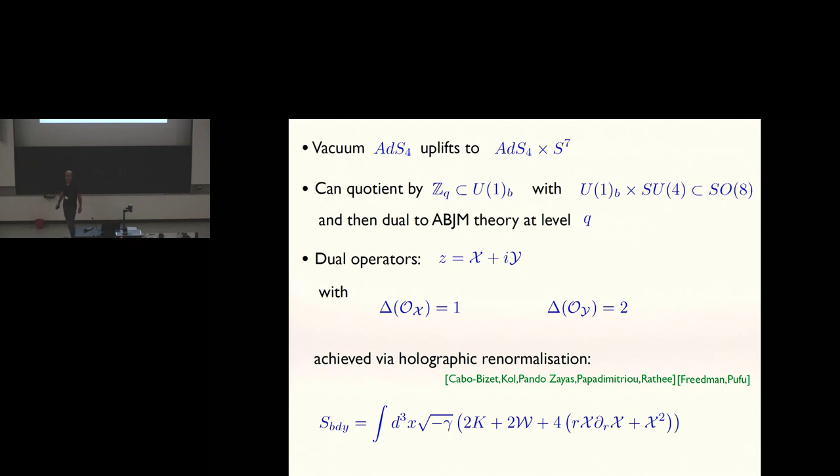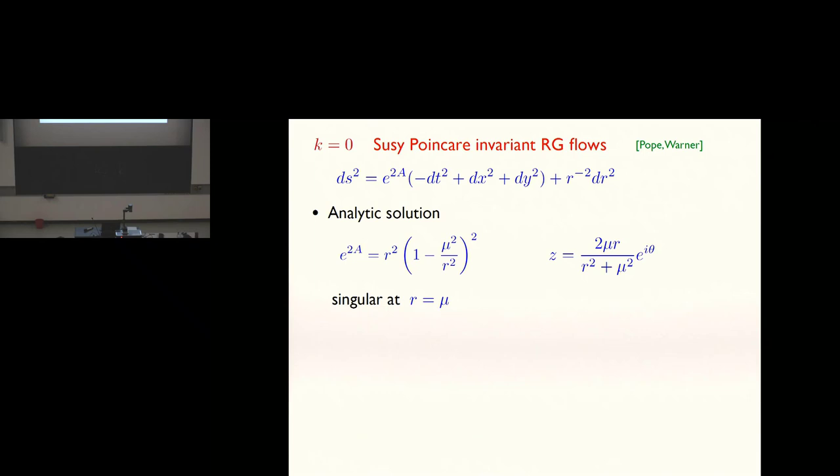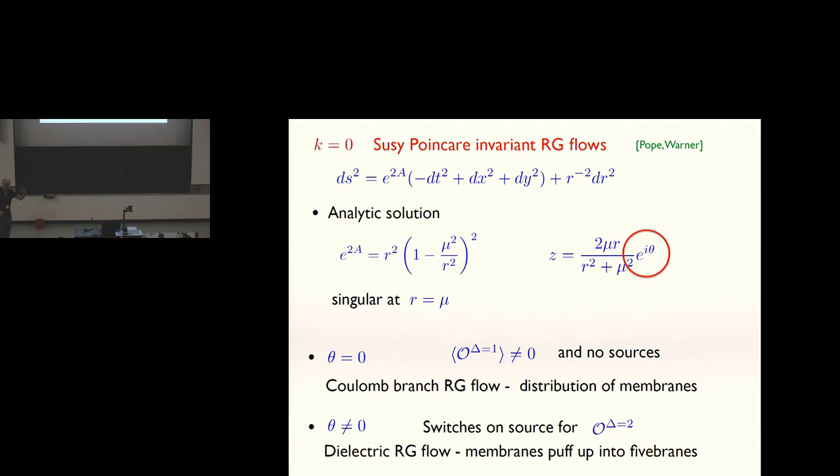Before we look at the boomerang flows with k non-zero, the Q-lattice of the SUSY-Q, let's just look at the k equals zero flows, which are ordinary RG flows. In fact, they've been looked at for many years, starting with Pope and Warner. They correspond to mass deformations of ABJM theory. If you solve the BPS equations with k equals zero, there's actually an analytic solution. A just takes this form and Z takes this form. If you look at that for just two seconds, you'll see that that's singular when R is mu. But that singularity is also well understood.